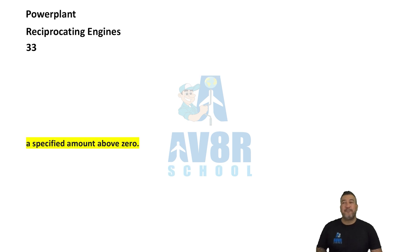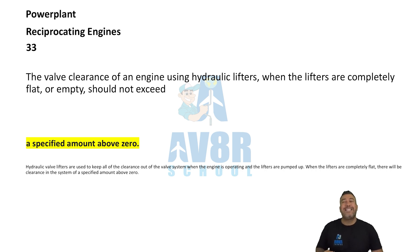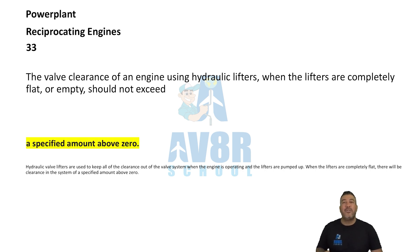Number 33. The valve clearance on an engine using hydraulic lifters, when the lifters are completely flat or empty, should not exceed a specified amount above zero.